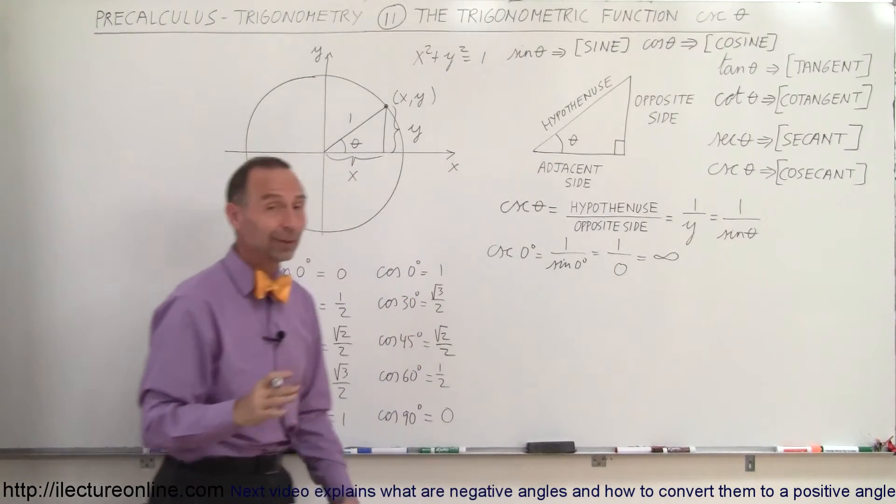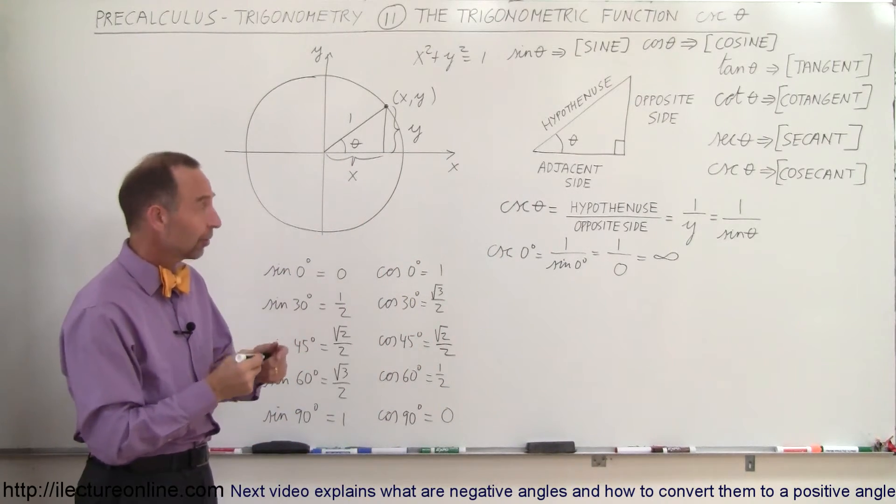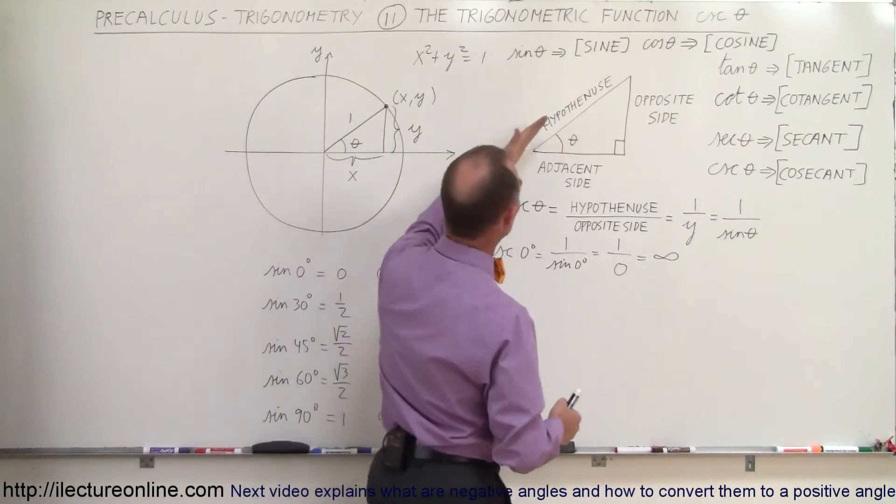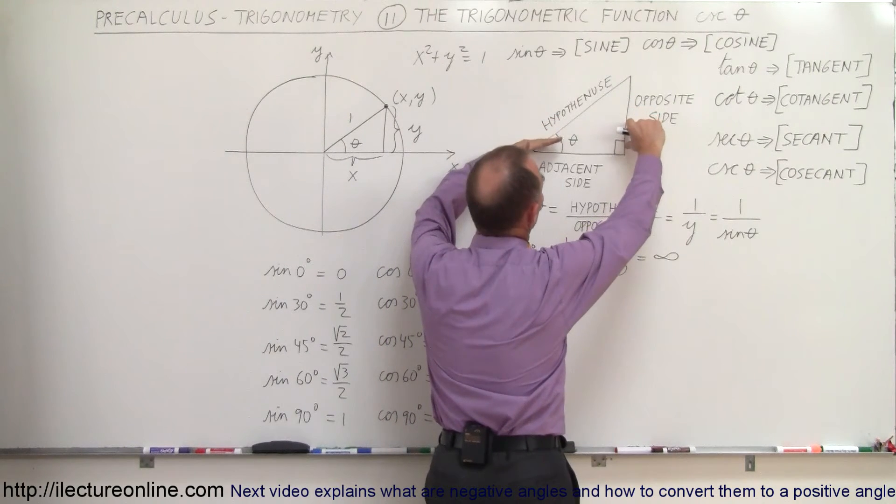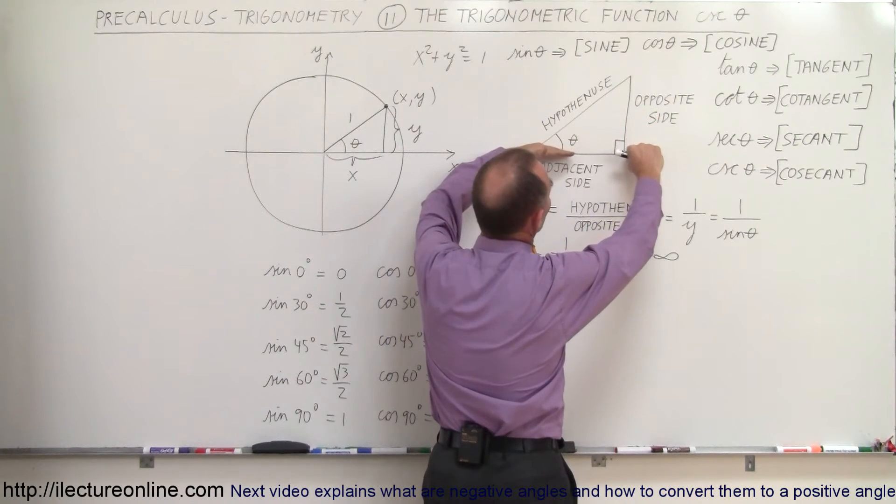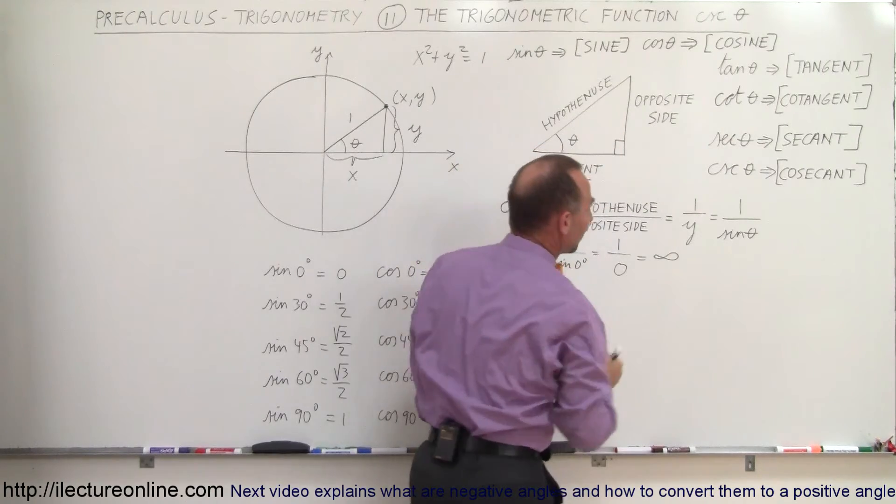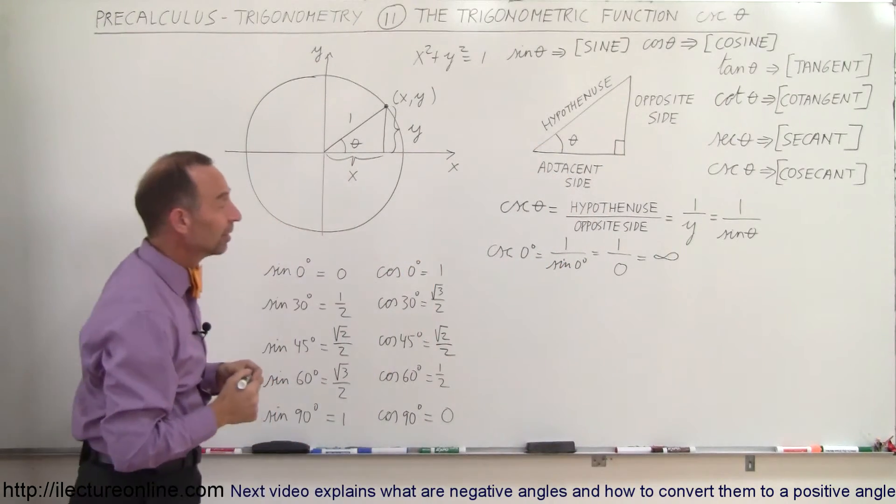So the cosecant of zero is infinity. That makes sense because notice as the angle gets small, the opposite side gets small. When the angle goes to zero, the opposite side is zero, so one divided by zero is infinity. That's how we look at the cosecant of the angle.